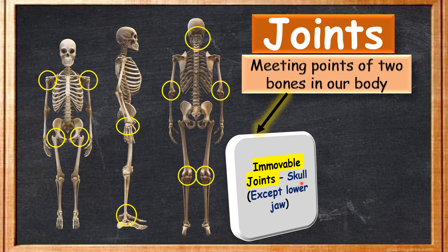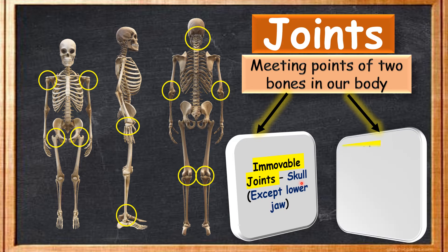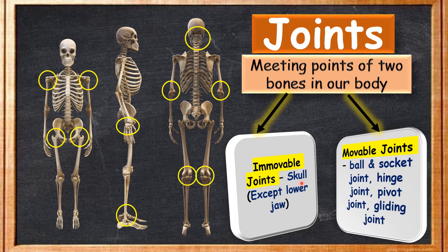In our body there are immovable joints, and we can find these in the skull — except the lower jaw. We can move our lower jaw, and because of this we can eat, talk, and chew. Other than the lower jaw, all the joints in the skull are immovable. The other category is movable joints — joints which we can move, like joints in our arms, legs, and fingers.